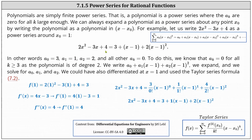In other words, a sub zero is 3, a sub 1 is 1, and a sub 2 is 2, and all other a sub k equals 0. To do this, we need to know that a sub k equals 0 for any k greater than or equal to 3 because the polynomial is of degree 2. We write a sub 0 plus a sub 1 times the quantity x minus 1 plus a sub 2 times the square of the quantity x minus 1, expand, equate the coefficients, and solve for a sub 0, a sub 1, and a sub 2. We could have also differentiated at x equals 1 and used the Taylor series formula, which is shown below in the bottom right.